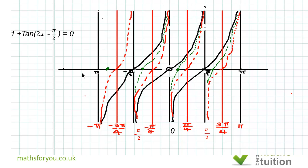Nothing else will change. The asymptotes will be the same, the period will be the same, the cycle will be the same. And the green graph is my sketch for 1 + tan(2x - π/2).